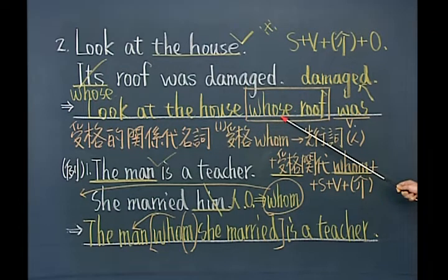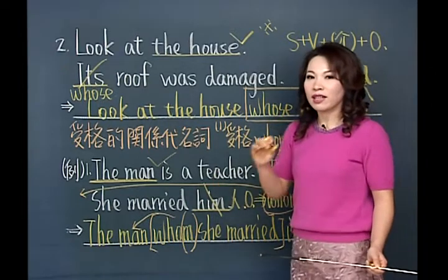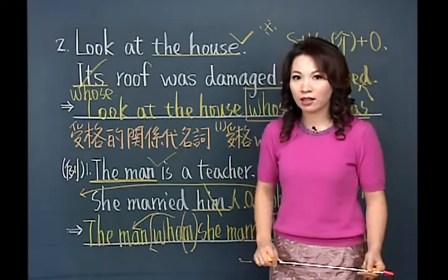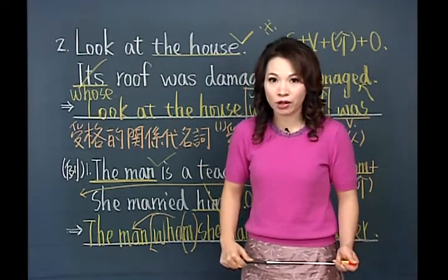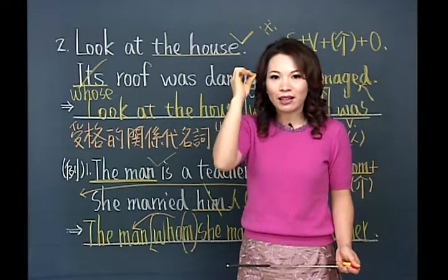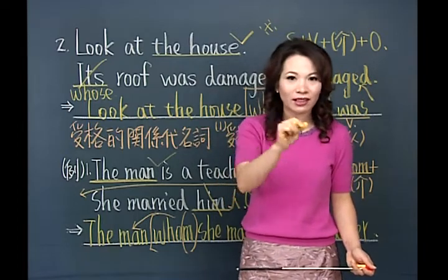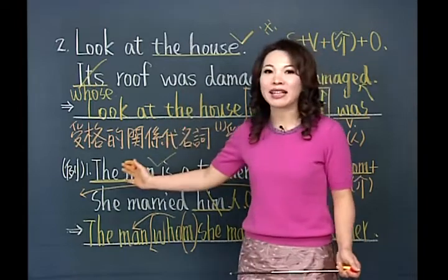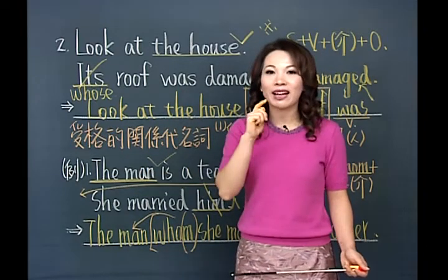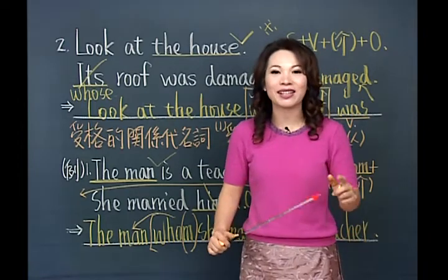要判断：这里的roof是不是纯粹的主词？不是，整个whose roof才是主词，是所有格，所以用whose。这里有出现him，所以用受格关带；那句话没有受词，当然就不能用受格关带。受格关带合并时要多一个步骤，因为要紧跟着先行词，所以要把它抓到前面去。多做一些练习总是不会错的。